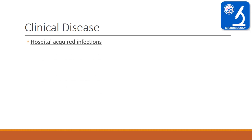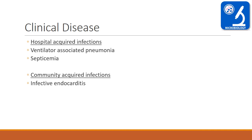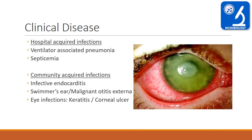Clinical disease caused by Pseudomonas falls into two varieties. Hospital-acquired infections include ventilator-associated pneumonia and septicemia. Community-acquired infections include infective endocarditis, especially in IV drug abusers. It can also cause ear infections ranging from mild (swimmer's ear) to serious (malignant otitis externa), eye infections like keratitis and corneal ulcer, Shanghai fever (a mild febrile illness like typhoid fever), and skin infections. Pseudomonas is the most common organism to infect burn wounds.